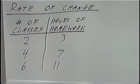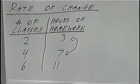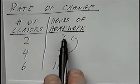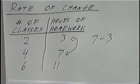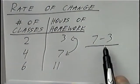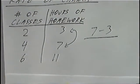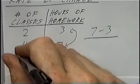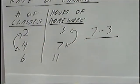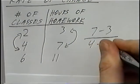To find the rate of change, we look at the right side of the table and pick any two numbers. For example, we can pick the first two numbers, three and seven, and subtract the second number minus the first number: seven minus three. We'll make this a fraction — seven minus three will be the numerator. For the denominator, we do the same thing but look at the left side of the table. The numbers that match up are four and two, so we subtract four minus two.